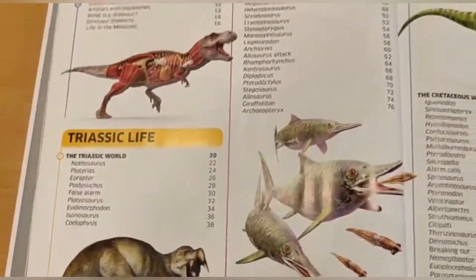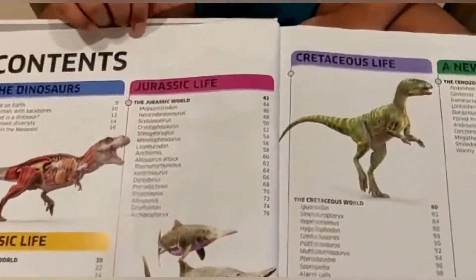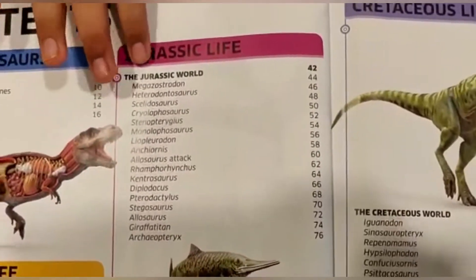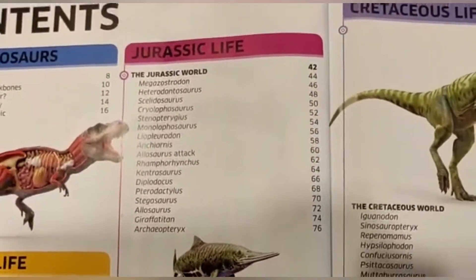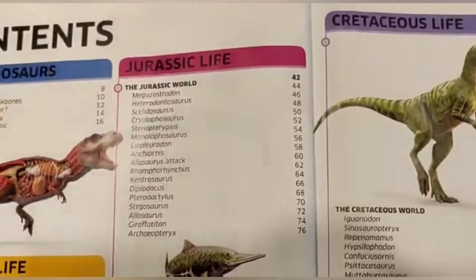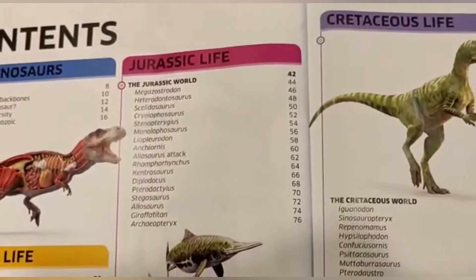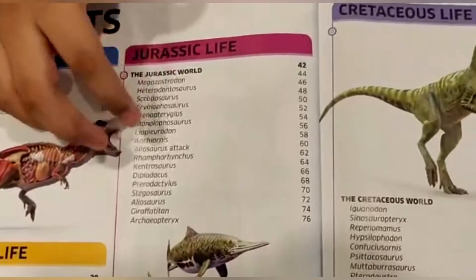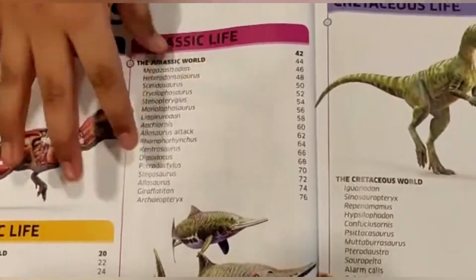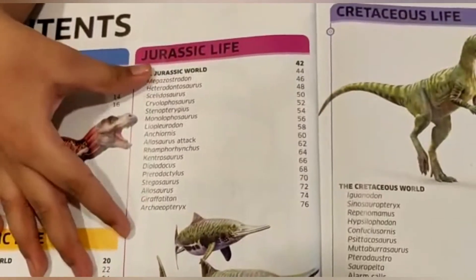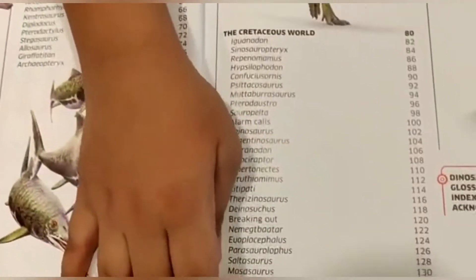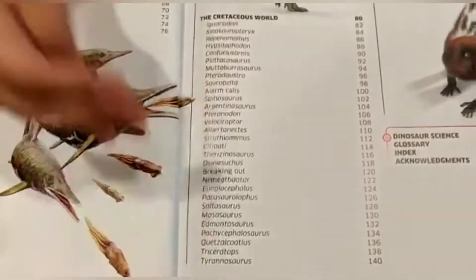The Jurassic Era — you might have seen the movie Jurassic Park, which also features this era. Don't think it's all about dinosaurs like Jurassic and Cretaceous being just one era. You might have seen the T-Rex in the movie, but in reality it's not in the Jurassic era — it's in the very last age of the Cretaceous era.